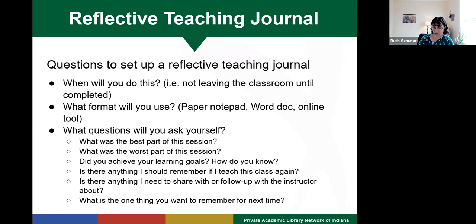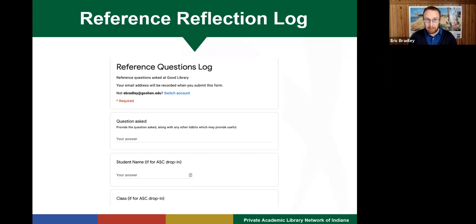So now I'm going to turn it over to Eric and he's going to talk about another way to use immediate reflection. I want us to now look at another example of immediate reflection in practice. Along with my work at PALNI, I spend the majority of my time as a reference and instruction librarian at Goshen College, which is a small liberal arts college in the PALNI consortium. Our reference desk provides research assistance and writing tutoring to our student body, and we work closely with our campus's academic success center.